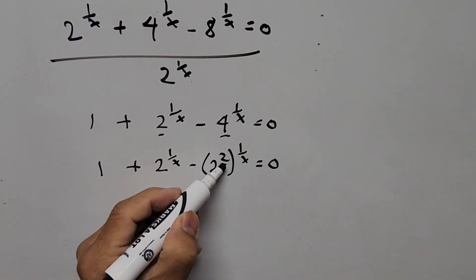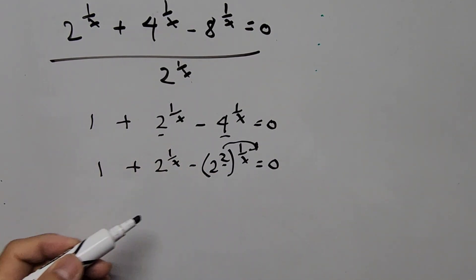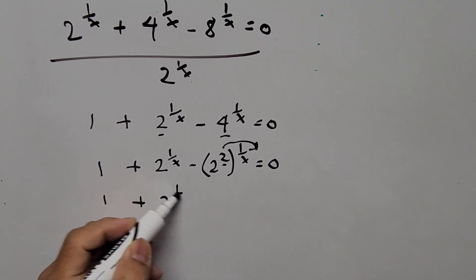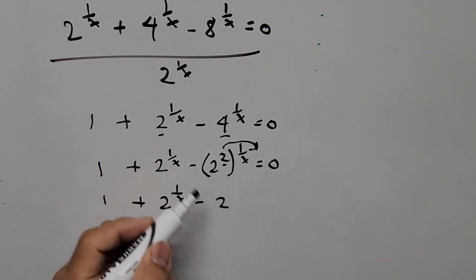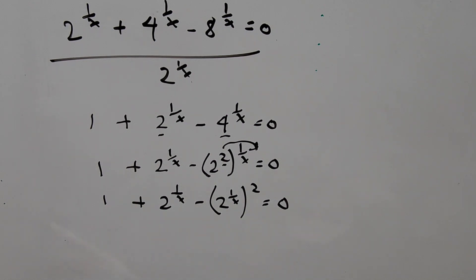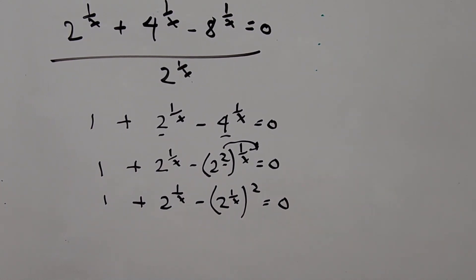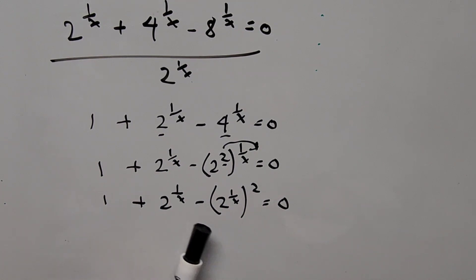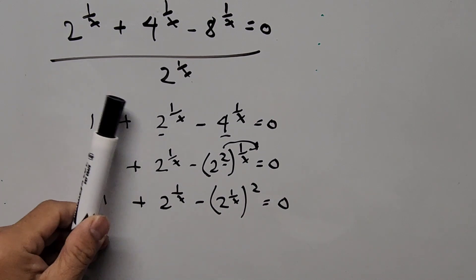Since the exponent on 4 is 2, we can take that out and convert this equation into a quadratic. The equation now becomes 1 plus 2^(1/x) minus 2^(1/x) squared equals 0. This converts to a quadratic equation. From here we can solve for x by introducing a new variable — letting u or y equal 2 to the power of 1 over x — and then using the quadratic formula. This is the result from the first step of dividing by 2^(1/x).